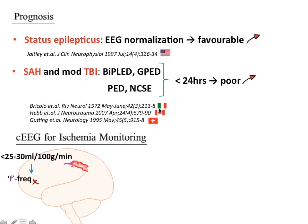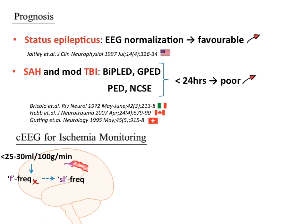Continuous EEG is extremely sensitive for identifying abnormalities in cerebral blood flow. When cerebral blood flow falls below 25 to 30 ml per 100 grams per minute in cerebral ischemia, continuous EEG shows absence of fast frequency waves first, followed by slow frequency waves. These changes identify diminished cerebral blood flow and ensuing cerebral ischemia, helping detect delayed cerebral ischemia.